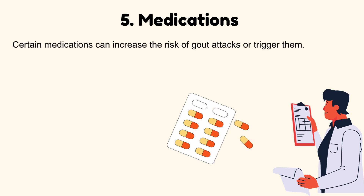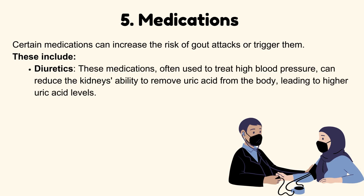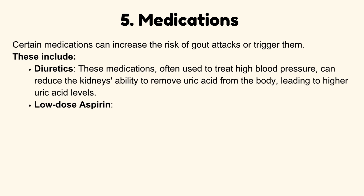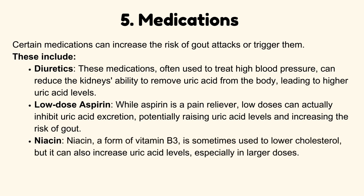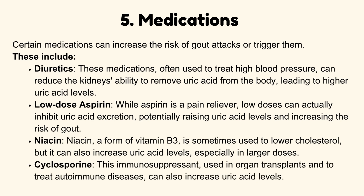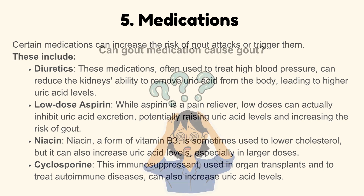Medications: Certain medications can increase the risk of gout attacks or trigger them. These include diuretics, often used to treat high blood pressure, which can reduce the kidney's ability to remove uric acid. Low-dose aspirin can inhibit uric acid excretion, potentially raising uric acid levels. Niacin, a form of vitamin B3 sometimes used to lower cholesterol, can also increase uric acid levels, especially in larger doses. Cyclosporine, an immunosuppressant used in organ transplants and to treat autoimmune diseases, can similarly increase uric acid levels.